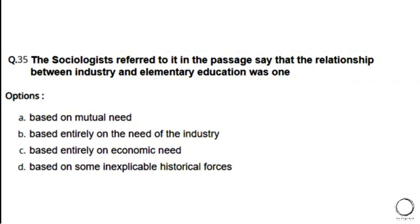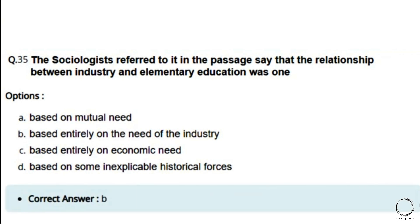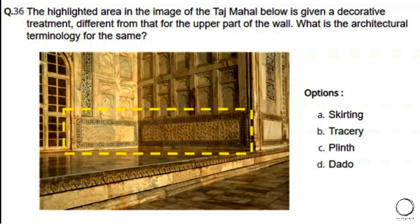Next: The sociologists say that the relationship between industry and elementary education was one — options: a) based on mutual need, b) based entirely on the need of industry, c) based entirely on economic need, d) based on some inexplicable historical forces. The right answer is option B — based entirely on the need of the industry.